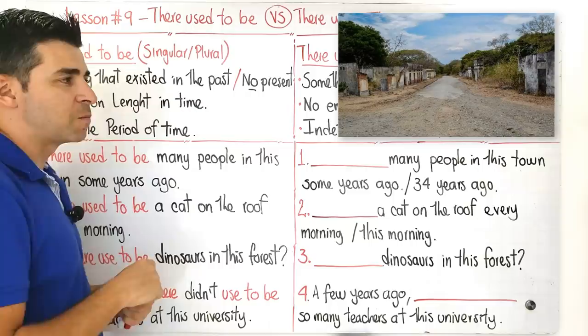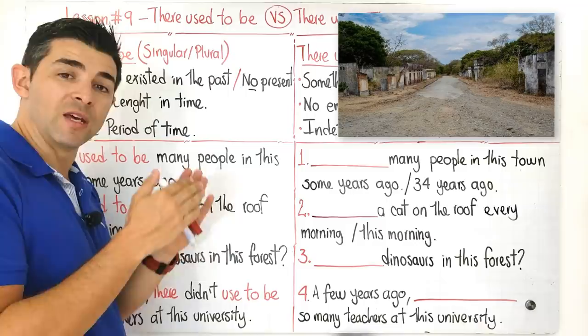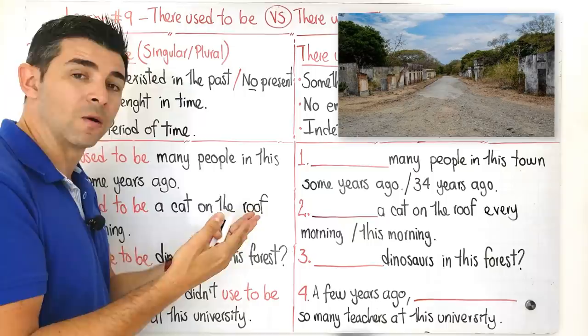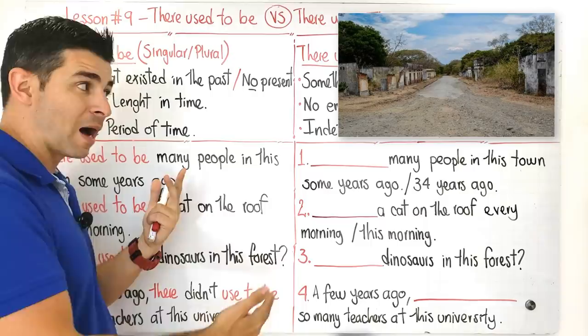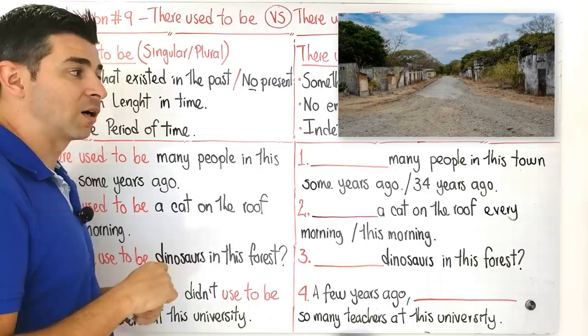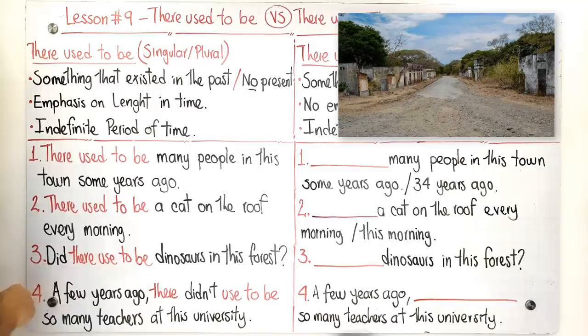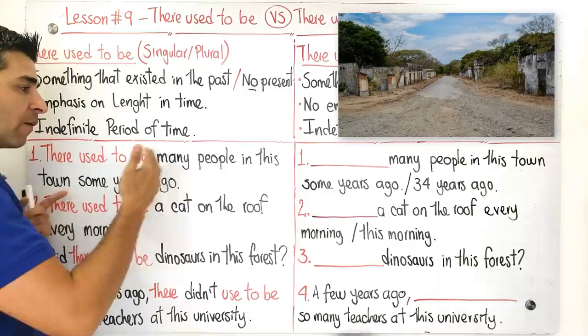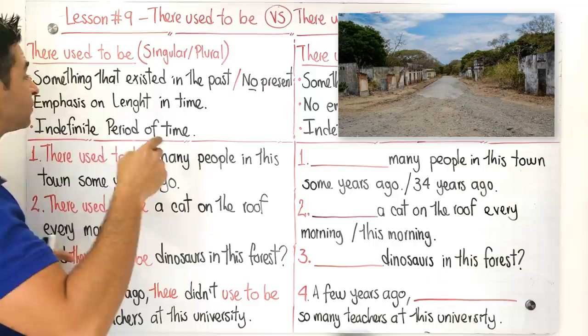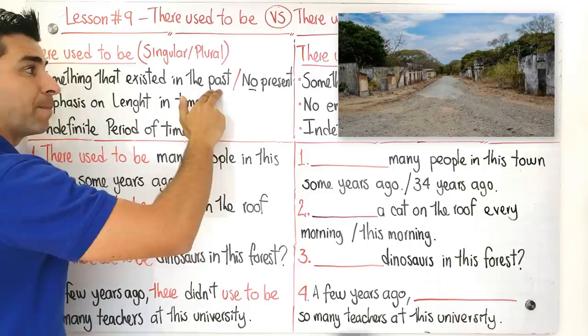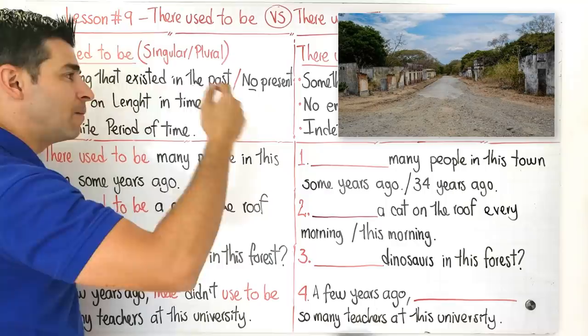So this picture that we have here represents just a part, a very sad part of the history of Colombia because in 1985 in this town which is called Armero, there was a tragedy where many people including Omayra and many others died. It was something really sad for our country. That's why we have exercise number one: there used to be many people in this town some years ago. Pay attention to the context. When we use there used to be here, we're talking about something that existed in the past, it's not in the present and wouldn't be in the future either. Pay attention to this.